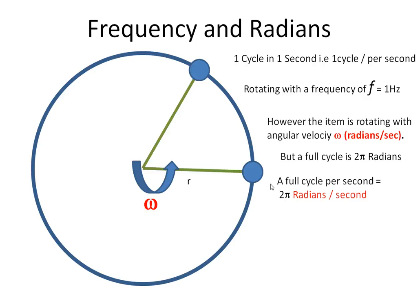So a full cycle in one second means we've done two pi radians per second. And we know that omega is equal to radians per second. So I can say that the angular velocity, in this case, was two pi radians per second.